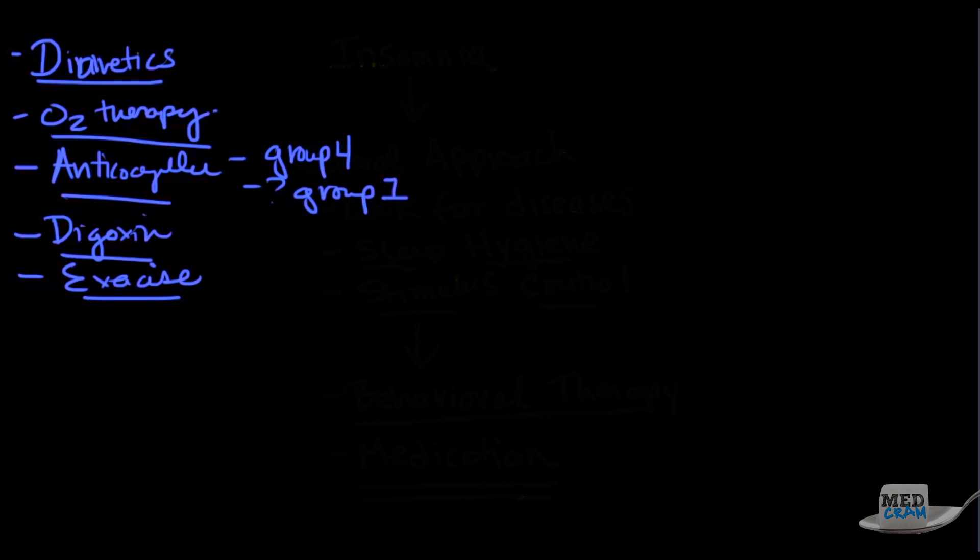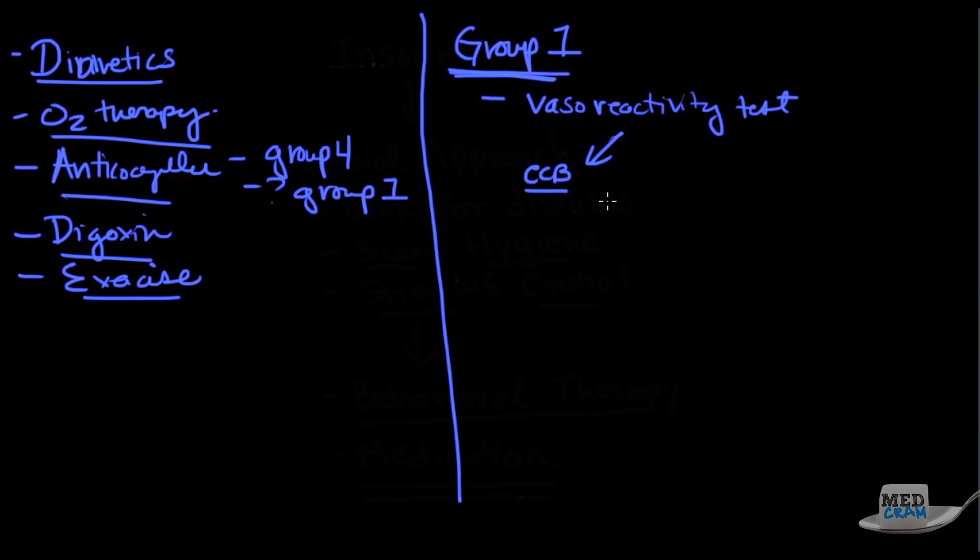Let's talk about group 1 now and the different classes. Before we start with the advanced medications, we have to do something called a vasoreactivity test. The reason why we do this is because those who respond to the vasoreactivity test are more likely to respond to ordinary medications like calcium channel blockers, like the dihydropyridine and diltiazem. So if they respond, if that's a positive response, calcium channel blockers. If it's negative, then we go on down to the more advanced medications.